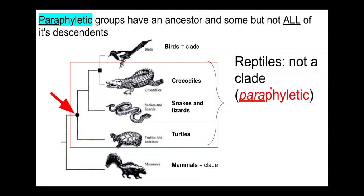Paraphyletic groups have an ancestor and some but not all of its descendants. Again, for my class you don't need to remember that exact definition — you just need to recognize when a non-monophyletic group has been created.